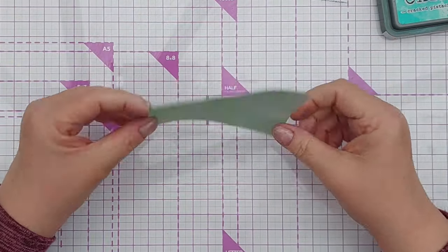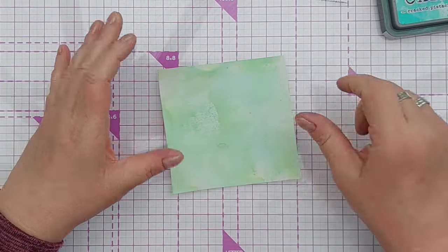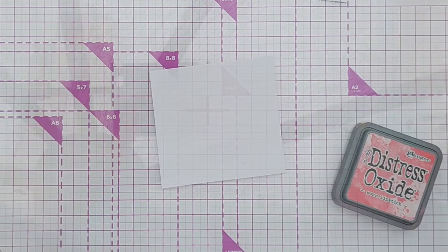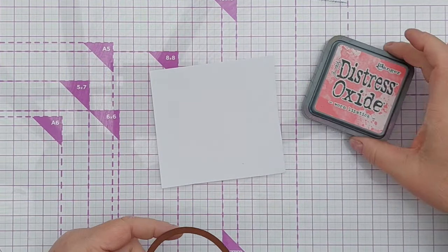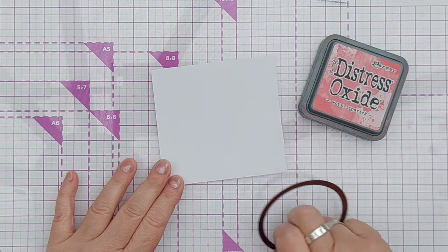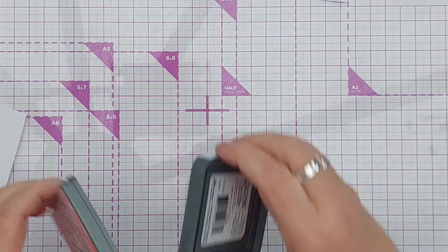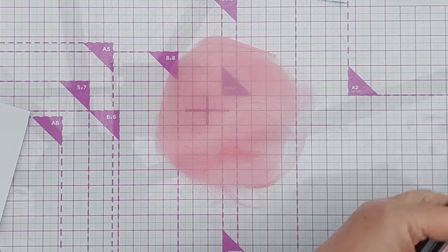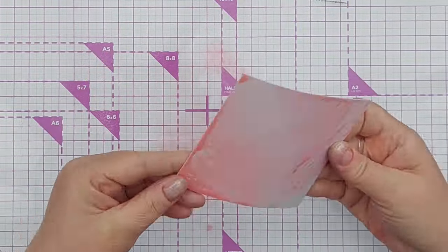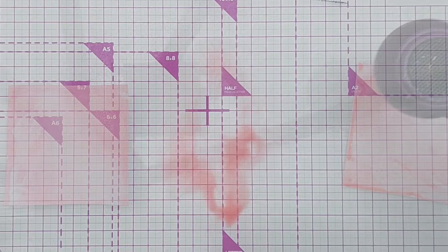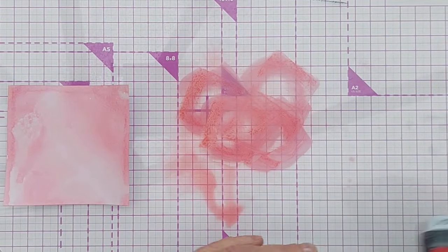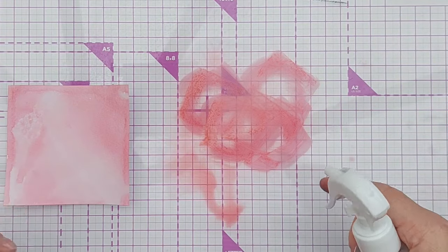I'm happy with that. It's all warped and curly but that's okay, when I die cut from it it will flatten out nicely. Now I'm going to do exactly the same thing but with Worn Lipstick on this piece of card which I'm going to cut the middle portion of the melon from. As I did before, I'll do it again to get a layered look and intensify the color.